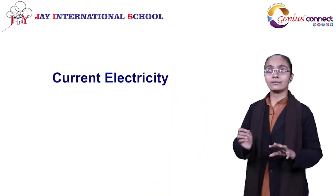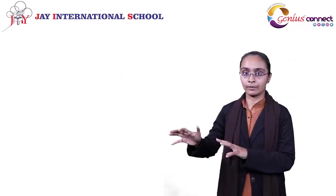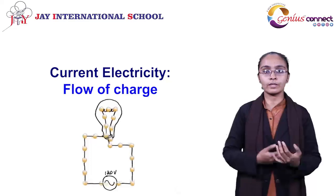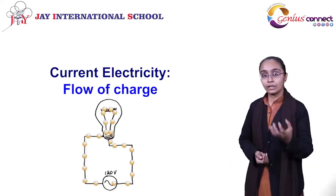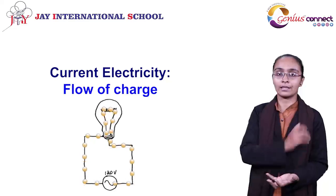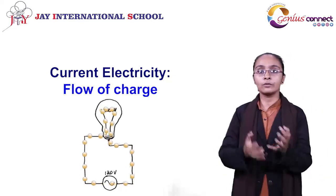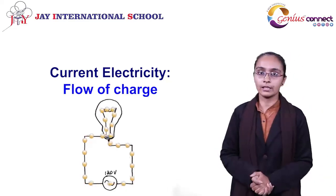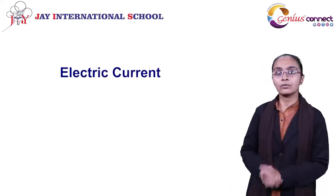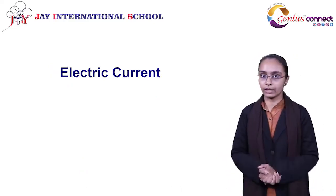Now we have to understand current electricity. What is current electricity? It is definitely the opposite of static electricity. In static electricity, the charge was in a static form, at rest. In current electricity, there is the flow of charge — flow of electrons. So that gives us the most important terminology, which is electric current.